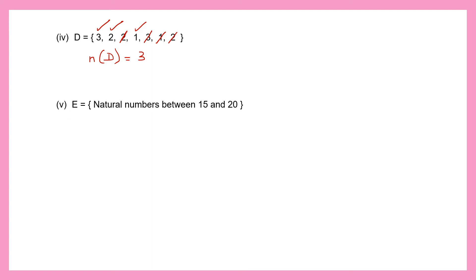Question E: Natural numbers between 15 and 20. Let's write it in roster form. Between 15 and 20 will be 16, 17, 18 and 19. So there are 4 elements, and the cardinal number of set E will be 4.